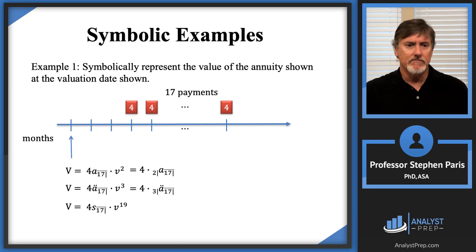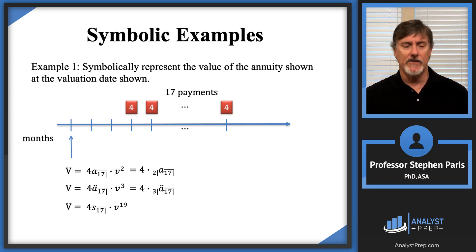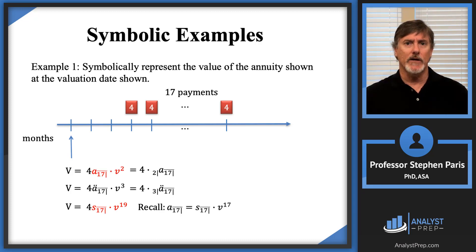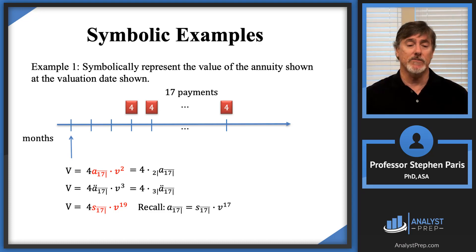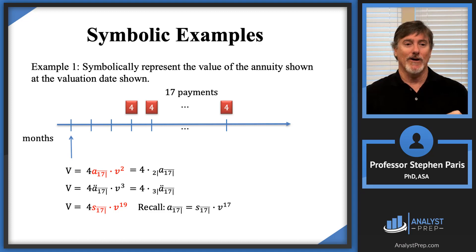Finally, four times S-angle-17 times V-to-the-19th may not be natural, but it's valid. The relationship between A-angle-17 and S-angle-17 is that their valuation dates are 17 periods apart, so discounting S-angle-17 by V-to-the-17th gives A-angle-17. Substituting S-angle-17 times V-to-the-17th for A-angle-17 in the first expression and grouping V-to-the-17th with V-squared gives V-to-the-19th — the bottom expression. All three expressions give the same numeric value.